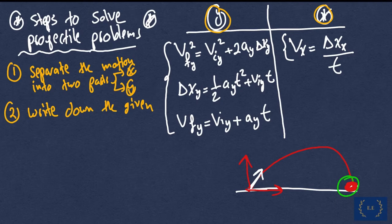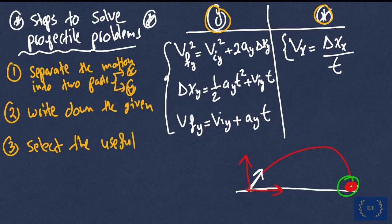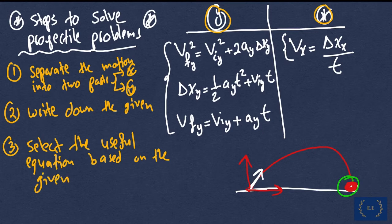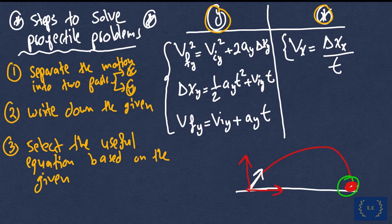Make sure the givens are clearly separated into the x and y directions. Step three: select the useful equation based on the given information. If I'm given information about the vertical, or y direction, motion, I'll look at those three kinematic equations to find the unknowns. If I'm given information about the x direction — say, the horizontal distance to the endpoint — I'll lean towards the constant velocity equation.